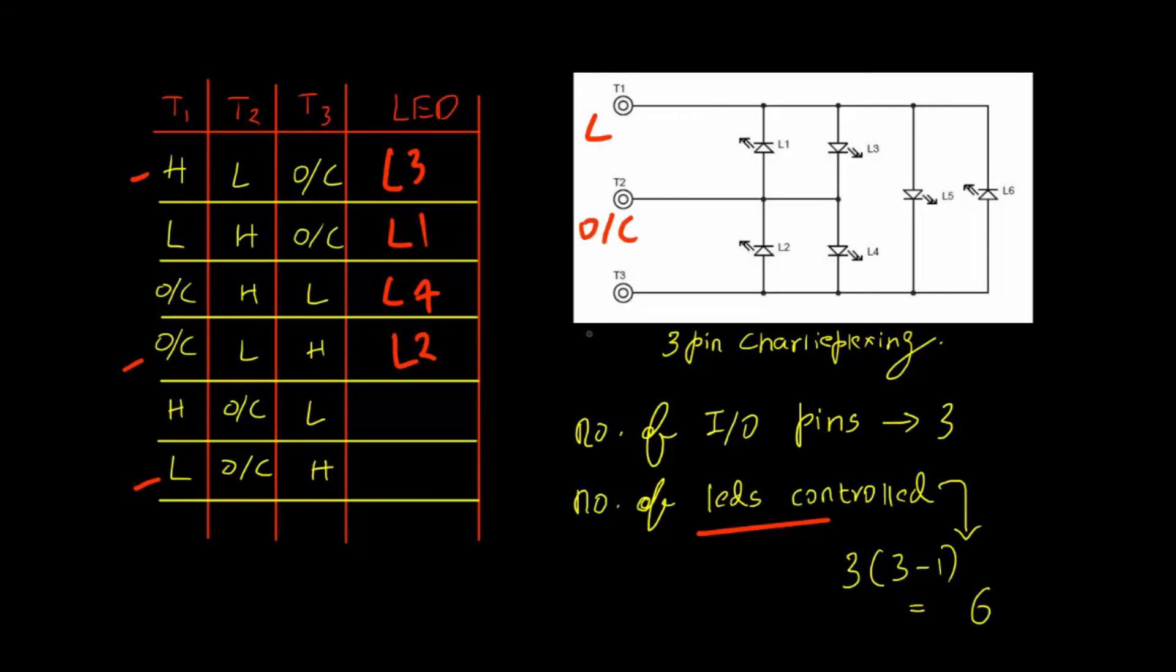Now if we take the condition of the last state where T1 is low, T2 is open circuited and T3 is high then what will happen. All those LEDs which are connected to the T2 will be disconnected from the circuit. These LEDs have no chance to lit up but L5 now is in reverse bias and L6 is in forward bias. So L6 will lit up but all other LEDs will be off. In this condition L6 lights up and if we reverse the polarity of T1 and T3 respectively from L to H and H to L then L5 will lit up. As you can see from this chart that by using three pins only and by changing the state of those pins we can control six LEDs independently. This is how the Charlie Plexing system works.